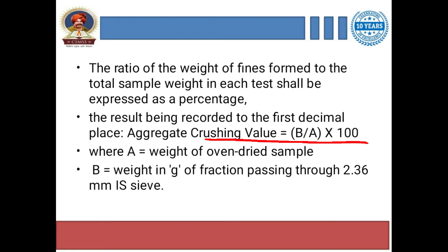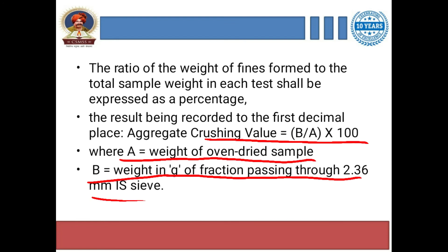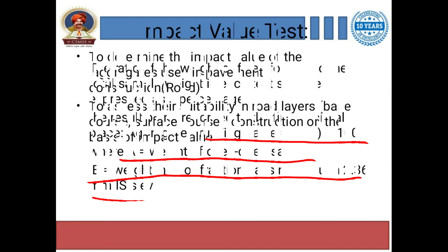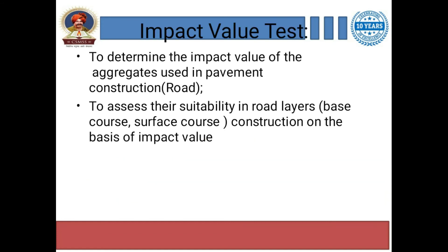The aggregate crushing value is calculated as: weight of crushed or finer material obtained after the test, divided by the weight of the dry sample taken initially, multiplied by 100. You gradually apply a load of 400 kilonewtons over the sample. This gives the percentage crushing value of the aggregate.